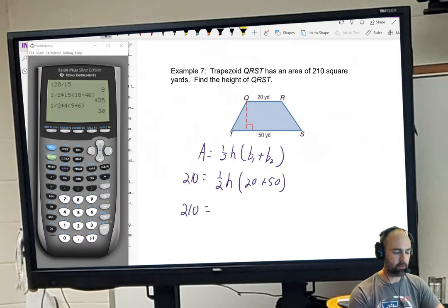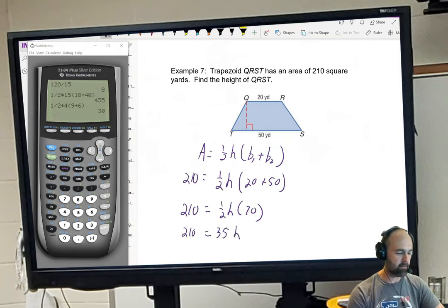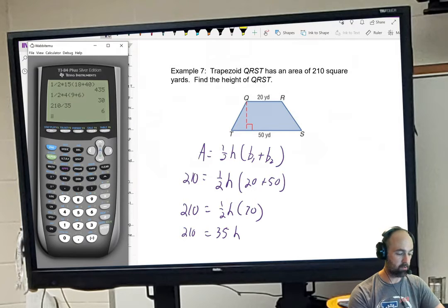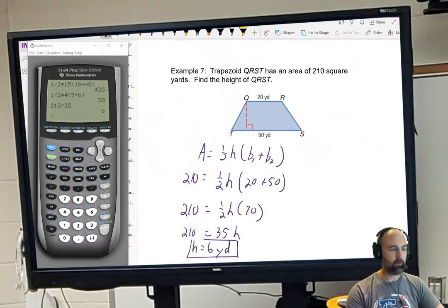And now we just go ahead and solve. 210 equals one half h times 70. Then we're going to make that one half times 70 into a 35. Then divide both sides by 35. 210 divided by 35 is 6, and my unit there is yards.